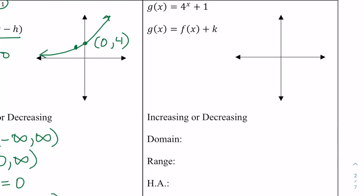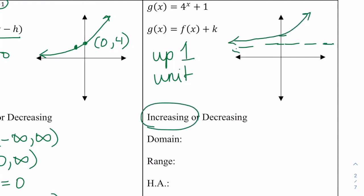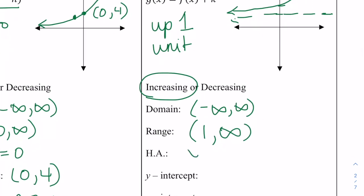For the next one, this is going to be a vertical shift up one unit. So now we're going to have everything shift up. It's still increasing. The domain is still negative infinity to infinity, but the range just got bumped up — from 1 to infinity. Because our horizontal asymptote is now 1. The y-intercept also got moved up 1, so that's (0, 2). And there are still no x-intercepts.